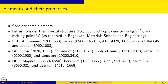Just to remind you, these are the pieces of information in the data. We are going to consider some elements and their crystal structure — whether they are FCC, BCC or HCP — their density given in kilograms per meter cubed, and melting point reported in degrees Celsius. This data is taken from Raghavan's Materials Science and Engineering textbook.